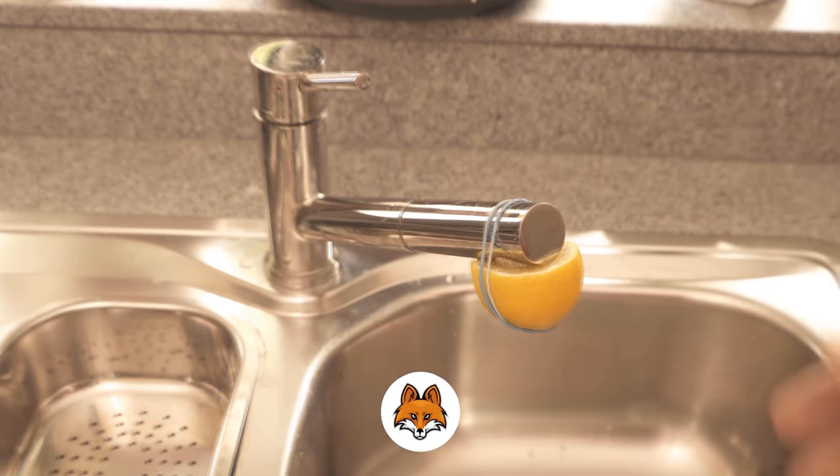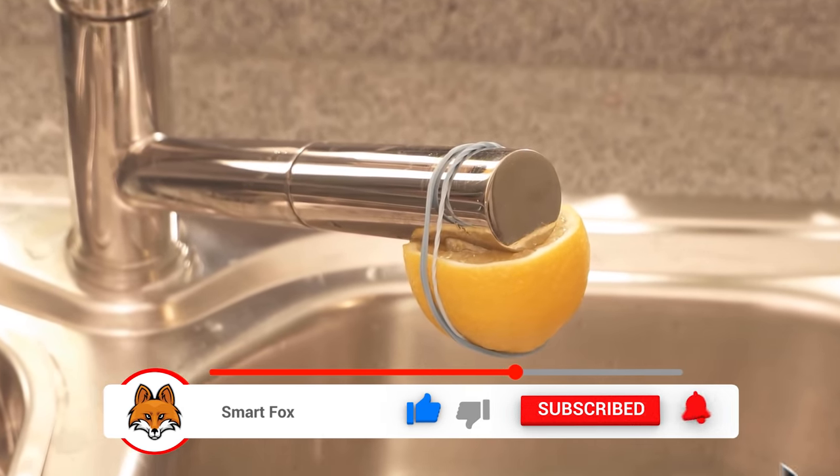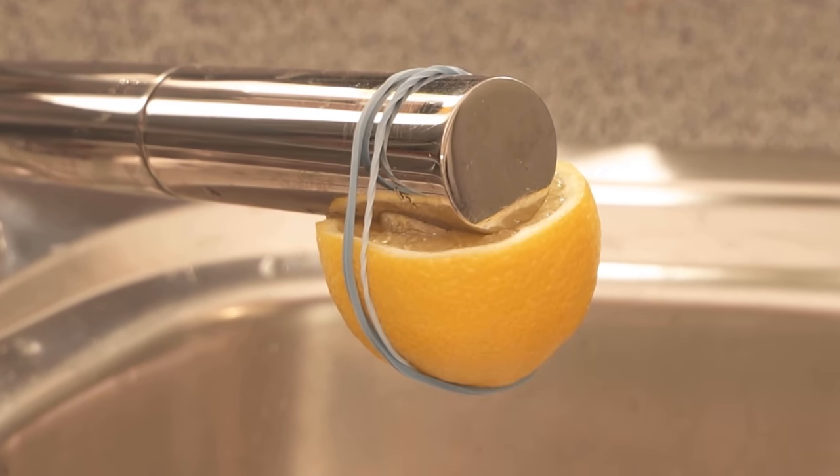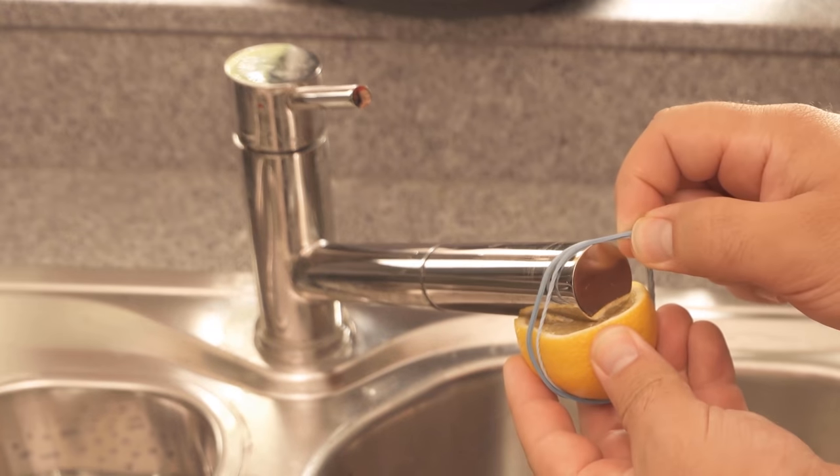Let it hang there like that for about 30 to 60 minutes, depending on how dirty and calcified it is. In this time the citric acid can develop its full effect and then we can see the result right away.